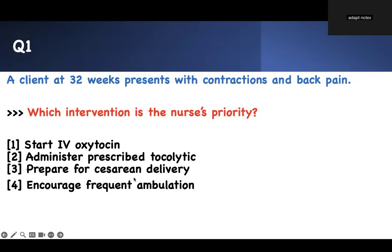First question. Test-taking strategy — I'm going to give you keywords, what you need to focus on. Which intervention is the nurse's priority? That means she has to do something as a priority. She has four options. Go for the buzzword. What is the buzzword in this question? A client at 32 weeks presents with contractions and back pain. Find the nurse's priority action. Options: start IV oxytocin, administer prescribed tocolytic, prepare for C-section, or encourage frequent ambulation.